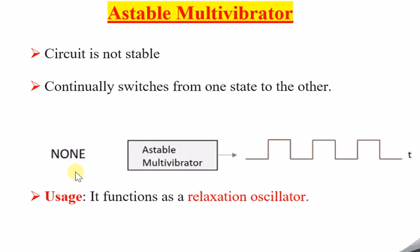Let us analyze the behavior of the circuitry with the help of a simple diagram. This is an astable multivibrator which I am highlighting now. Does it require an input? In the case of an astable multivibrator, no input is required, because it is already unstable. Even if you give input, it doesn't make a difference. It is already continuously switching, so no input is required — that is why I have written 'none' here. Without giving any input, I still get this continuous changing state output.